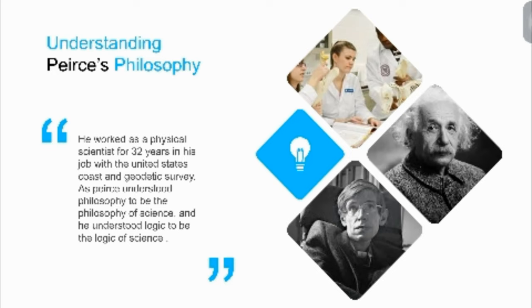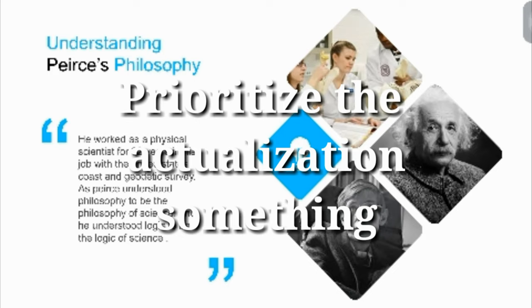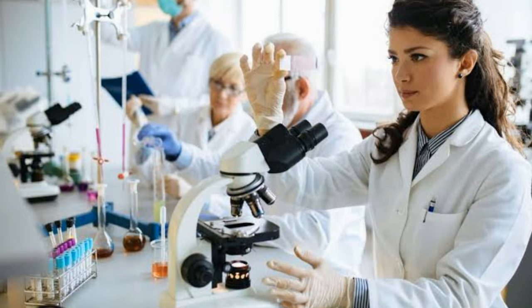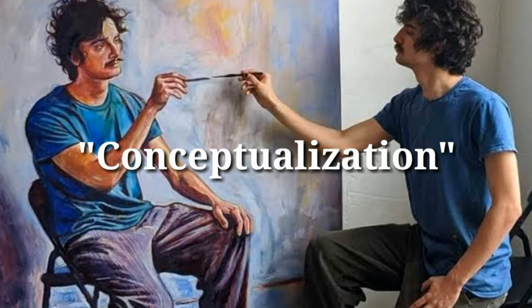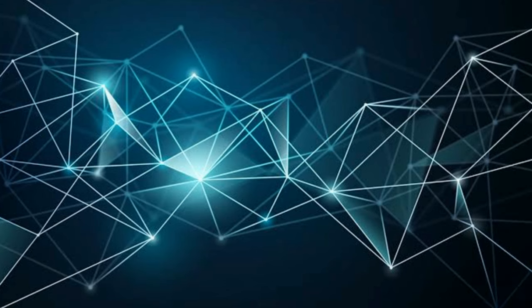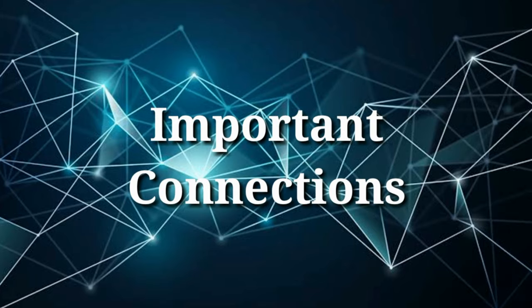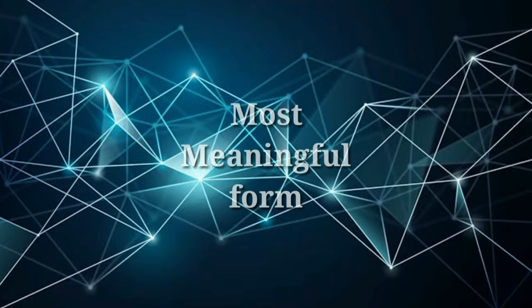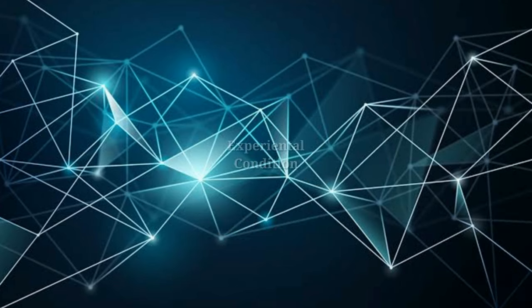He treated philosophy and logic as sciences — not in a purely empirical manner, but that's how he viewed these fields. This is also the reason why he named his view 'pragmaticism' rather than traditionally calling it pragmatism, since the limited frame of pragmatism prioritizes the actualization of something. For Peirce, science in the context of his view can appear in whatever way, whether in conceptualization or in practical use. The whole meaning of a clear idea or concept, considering its practical bearings — or important connections — must have some sort of experiential conditions in order to attain its most meaningful form.